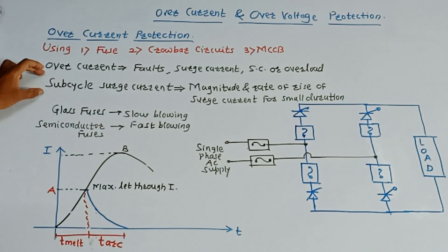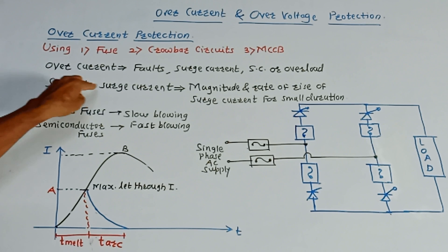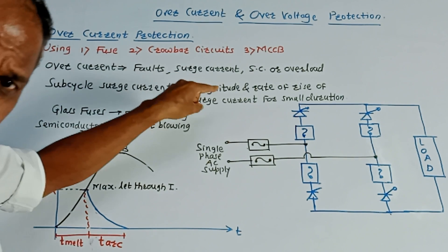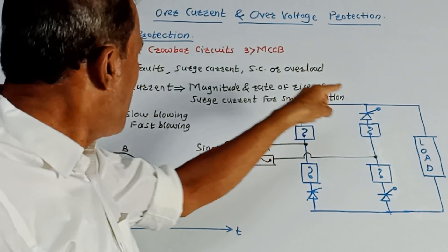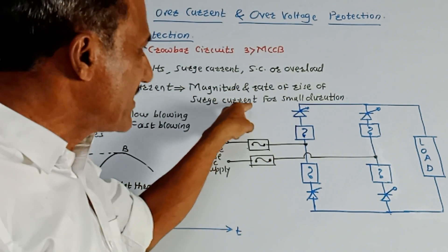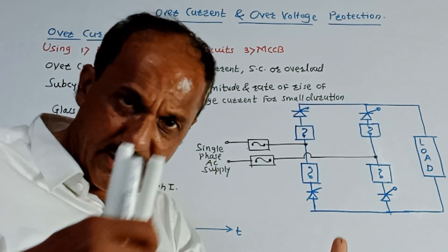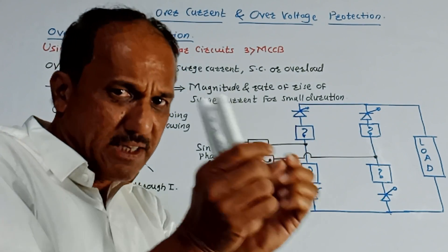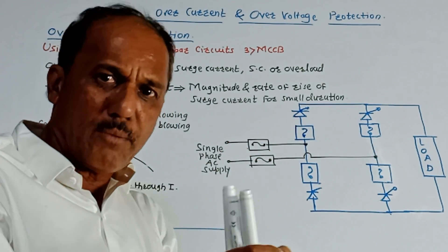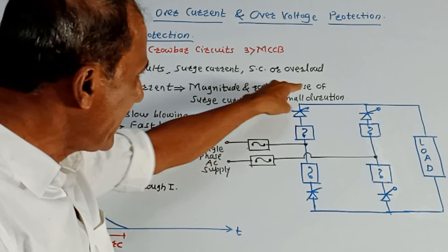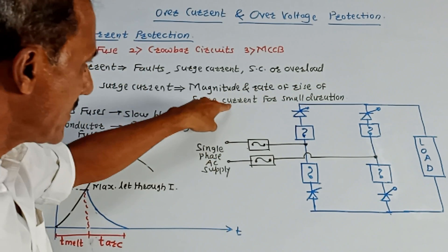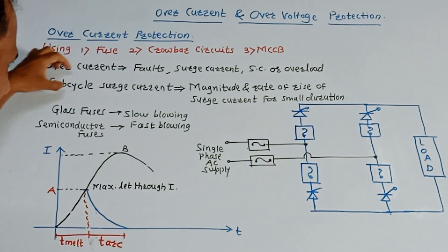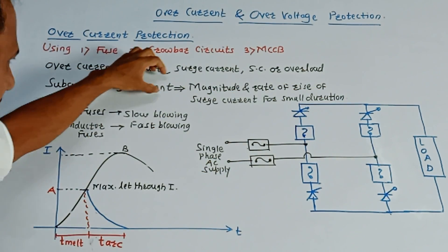There is one typical term which is called sub-cycle surge current. It is defined as the magnitude and rate of change of surge current. The surge current is a certain maximum current which is flowing for a typically small amount of time period. So magnitude and rate of rise of surge current for small duration is called sub-cycle surge current.